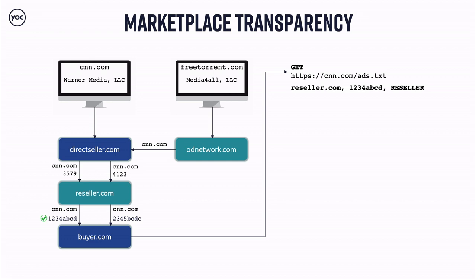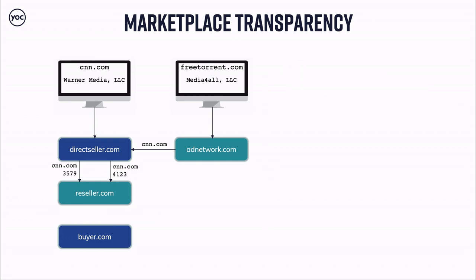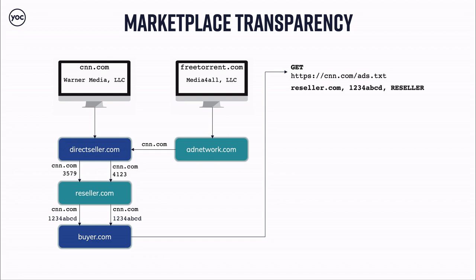The buy-side platform would validate if the reseller is authorized to sell cnn.com inventory by checking the ads.txt file at cnn.com. They'd find reseller.com listed as an authorized seller with ID 1234abcd. The first bid request looks completely legit. The second one, originating from freetorin.com, would probably be rejected because publisher ID 2345bcde was never found in cnn.com's ads.txt file. Great job — except the shady ad network's fraud didn't go through. But things don't always go so well.